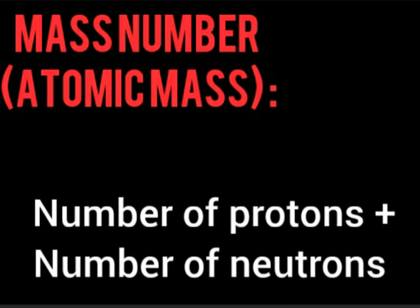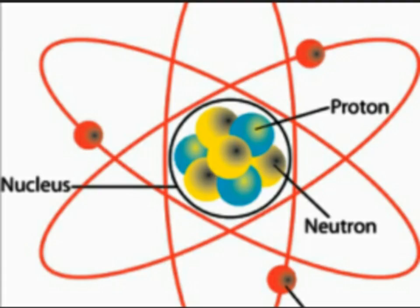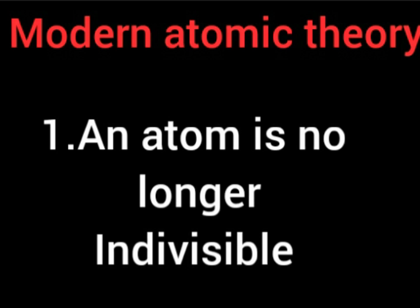Now that we know about atomic number and mass number, we are going to move to the postulates of modern atomic theory. The first postulate of modern atomic theory is that the atom is no longer indivisible.